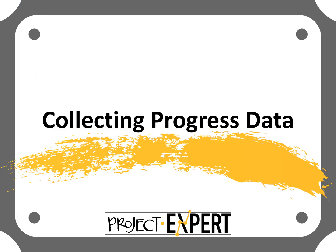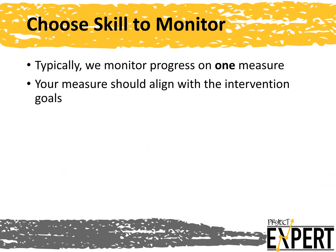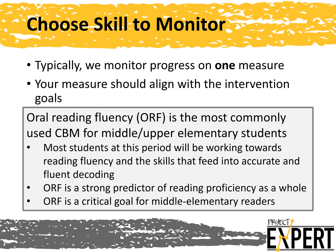Now let's discuss how we collect progress data. The goal of progress monitoring is to use brief skill indicators. Thus, convention is to monitor with only one measure. This measure should closely align with the content of the intervention the student is receiving. You might progress monitor with more than one measure if the student is receiving a multi-component intervention where one measure would not adequately capture progress. In third grade and above, the most commonly used progress monitoring measure is oral reading fluency, or ORF, because ORF is a strong indicator of general reading proficiency as well as the skills that feed into fluent reading.